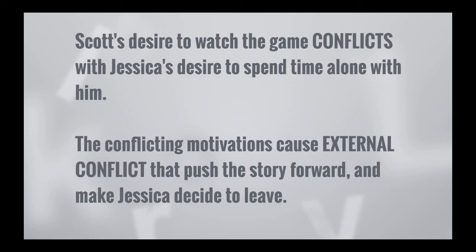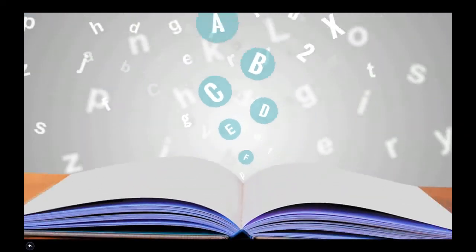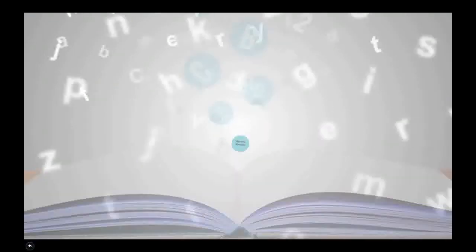This is how conflict is created in a story. We have explained the concept of character motivation, you're able to recognize what motivates a character to act, and you've seen between Scott and Jessica how those conflicting motivations cause conflict that moves a story forward. You're ready to go — you definitely understand character motivation.